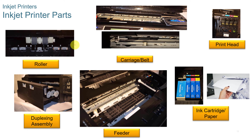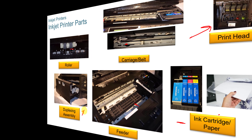Some of the parts you'll see on an inkjet printer are the rollers, the cartridge belts, the printer heads, the inkjet cartridges, the paper feeder trays, and the duplexing assembly.